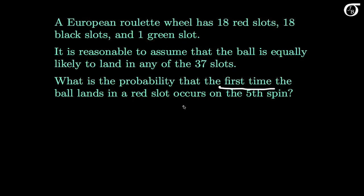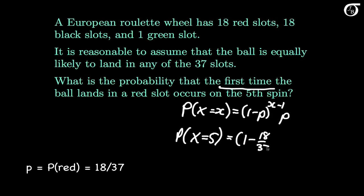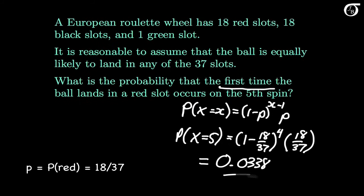For the geometric distribution, the probability x equals little x is 1 minus p raised to the x minus 1, times p. We want the probability x equals 5. There are 18 red slots out of 37 total, so p equals 18/37. We raise the probability of failure, 1 minus 18/37, to the fourth power (5 minus 1), then multiply by 18/37. This works out to 0.0338 when rounded to 4 decimal places.